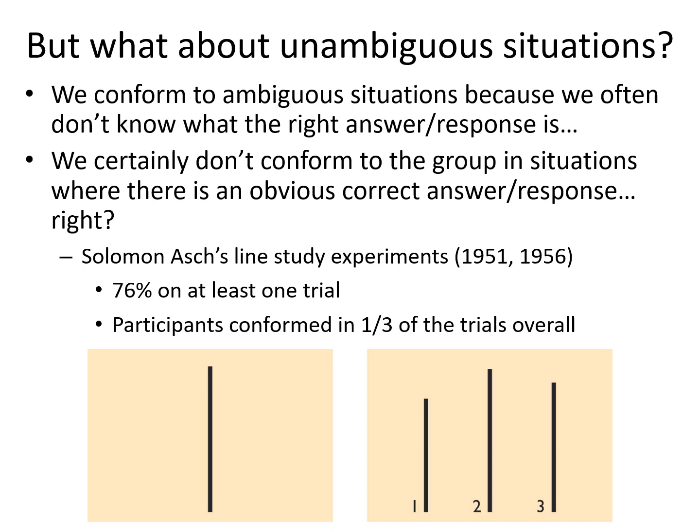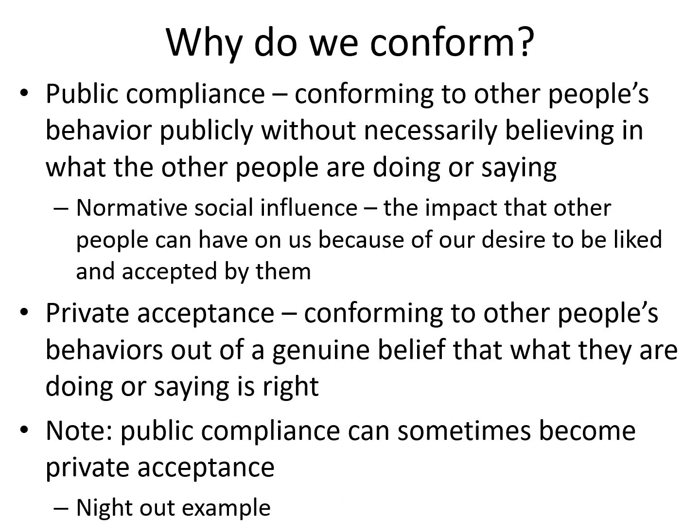Why we conform became a major question after Asch published these results. Asch and others argued that the reason behind our conformity could happen in two different ways. Asch argued that many people in his study seemed to be conforming to the group because they just didn't want to stick out — they didn't want to be that person who gave a different answer. We now call this type of conformity public compliance. Closely linked to this is the concept of normative social influence — essentially an indicator of the weight that a group of people can have on us.